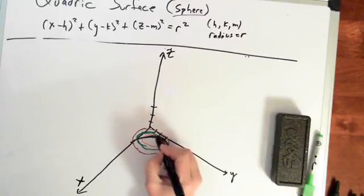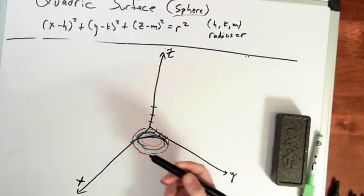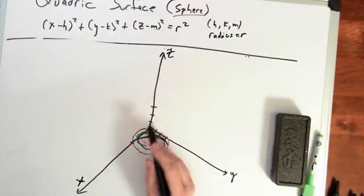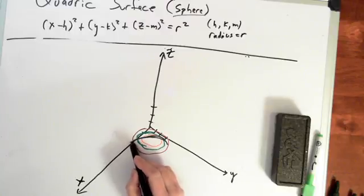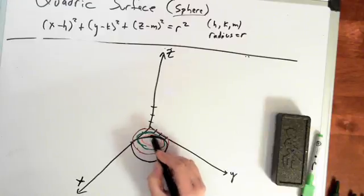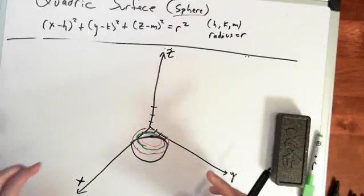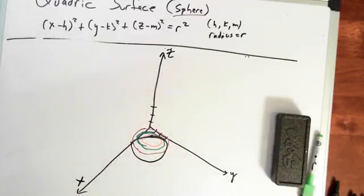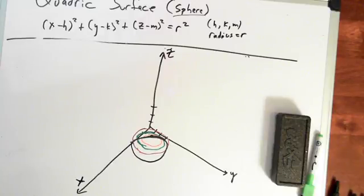If we continue to change the z variable in the negative direction, we would get the same thing — the circles coming out the other way. At z equal to 2, that's just the top of the sphere, because the circles are getting smaller and smaller until they're just a point. Hopefully this helps explain how to maneuver and understand what the quadric surface is for a sphere.